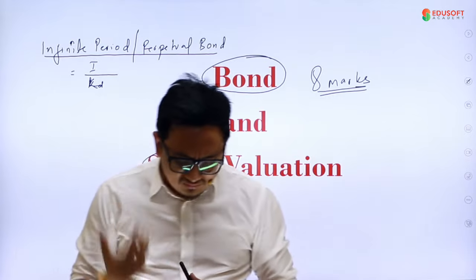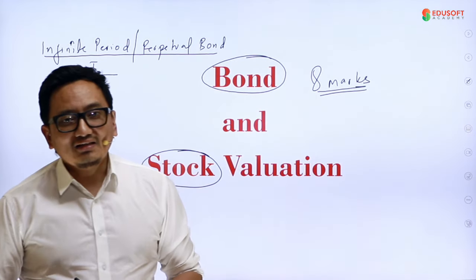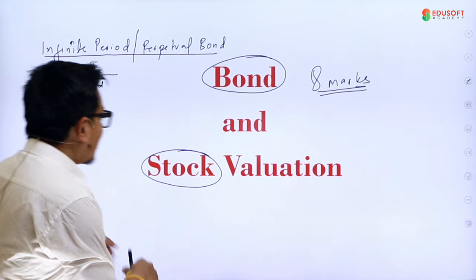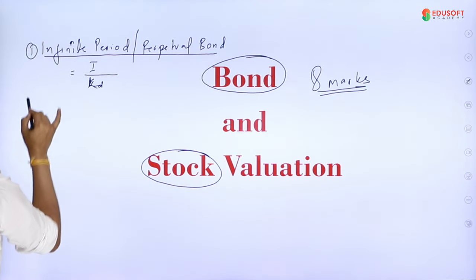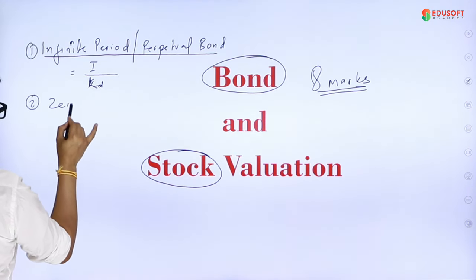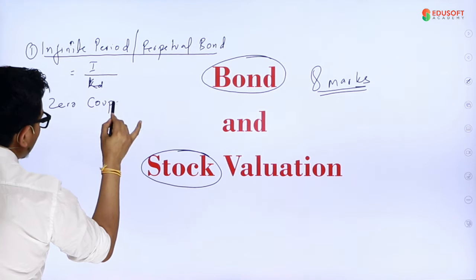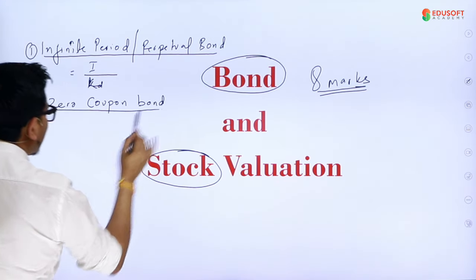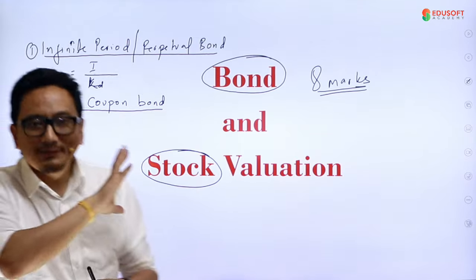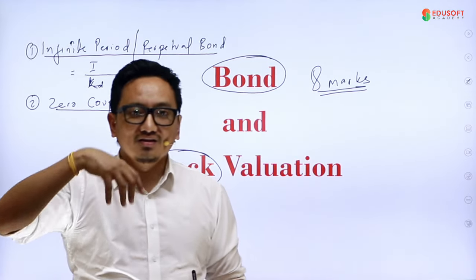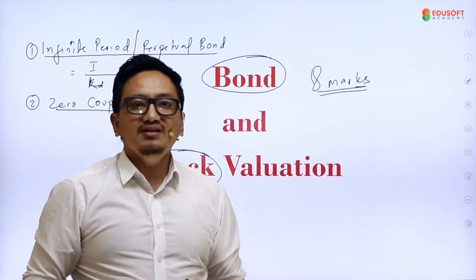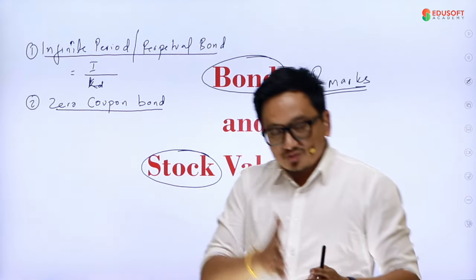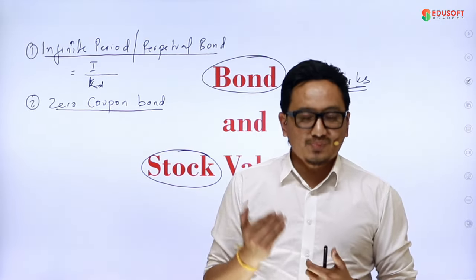The second type is the zero coupon bond. A zero coupon bond pays no periodic interest or coupon. The bondholder receives a discounted price at the start.